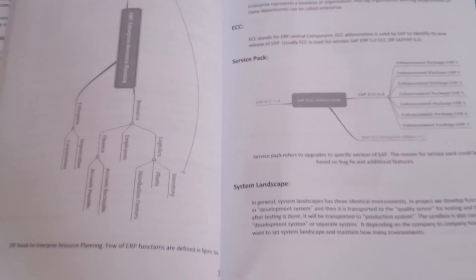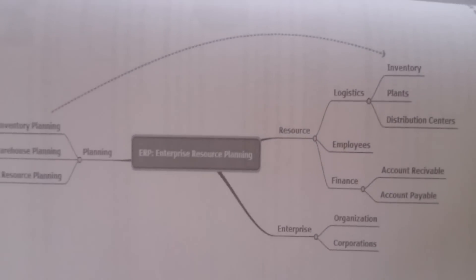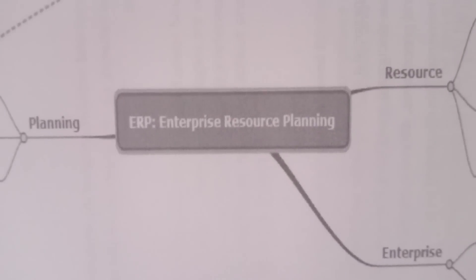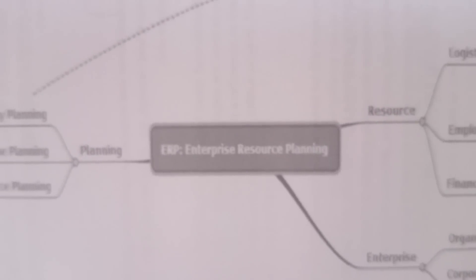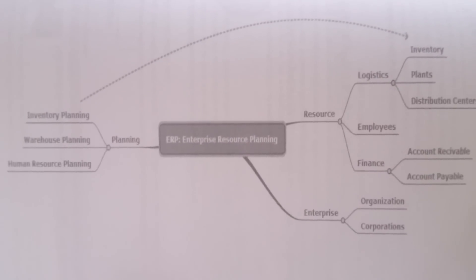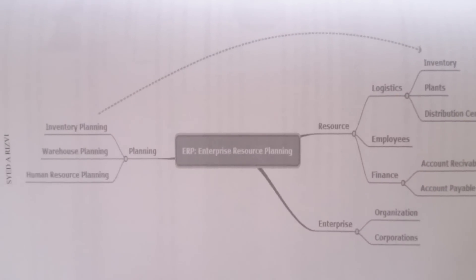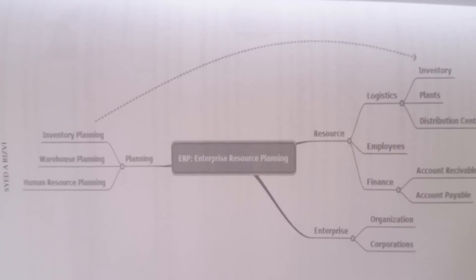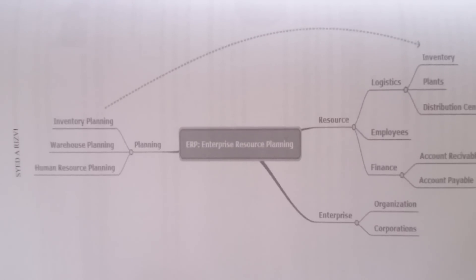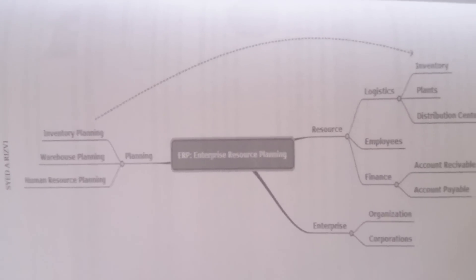What makes this book different? It has mind maps and easy-to-understand topics. Here is a mind map explaining ERP — enterprise resource planning. ERP has three branches: resources, enterprise, and planning. SAP ERP is focused on the ERP solution. Under planning, we see inventory planning with logistics; employees are part of resources; and enterprise covers finance and organization or corporations.